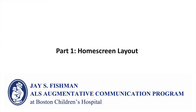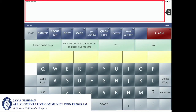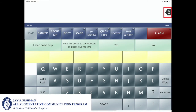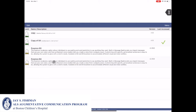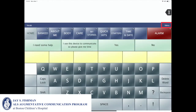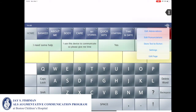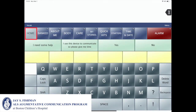The video will now review the home screen layout. Outlined in red is the message window. The black X clears the content in the message window. The vocab tab allows you to choose between different vocab page sets. The menu tab opens up different editing and setting options, which will be reviewed later. The home button brings the communicator back to the home page if they are on a different page set.